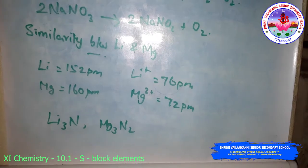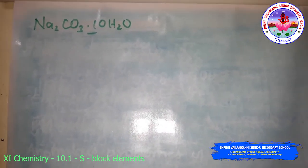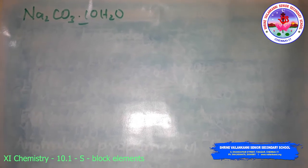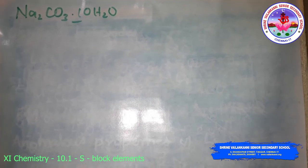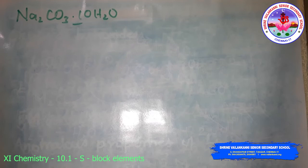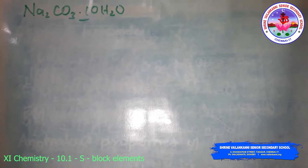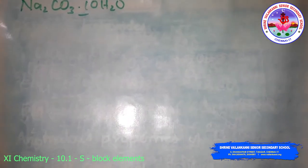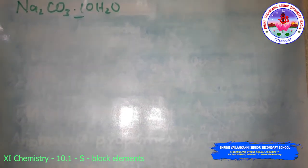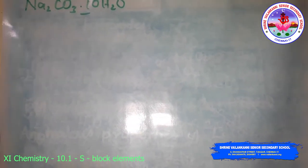Next are some important compounds of sodium: sodium carbonate (washing soda), sodium chloride, and sodium hydroxide — their preparation and properties. Sodium carbonate is generally prepared by the Solvay process. In this process, advantage is taken of the low solubility of sodium hydrogen carbonate, which gets precipitated in the reaction of sodium chloride with ammonium hydrogen carbonate. Carbon dioxide gas is passed through a concentrated solution of sodium chloride saturated with ammonia, where ammonium carbonate followed by ammonium hydrogen carbonate are formed.